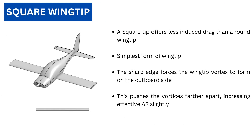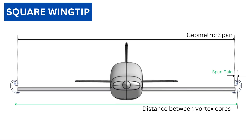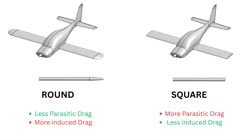Square or cut-off wingtip: even a simple cut-off tip offers less induced drag than a round wingtip. It is the simplest form of wingtip, and the sharp edge forces the wingtip vortex to form and reside on the outboard side of the tip rather than above, as for the round tip. This effectively pushes the wingtip vortices farther apart from the centerline of the aircraft and increases the effective aspect ratio, although by a small amount. It should be kept in mind that the shape of the wingtips affects both parasitic drag and induced drag.